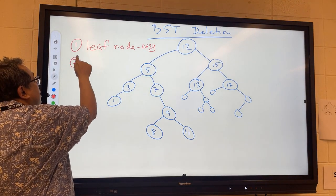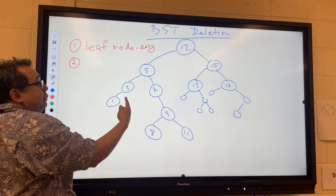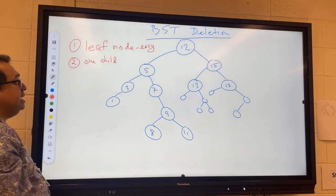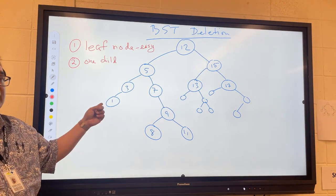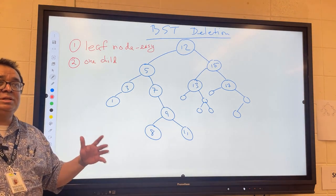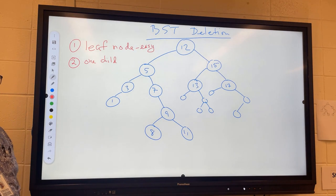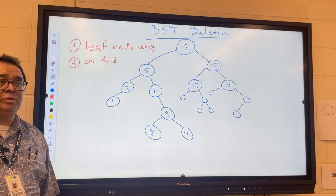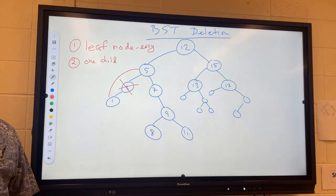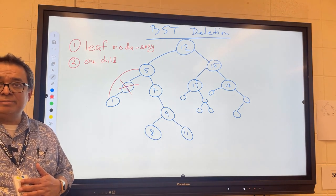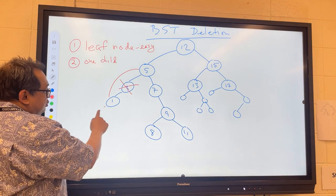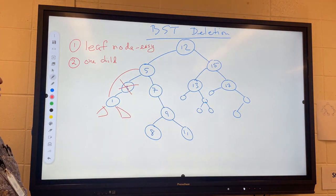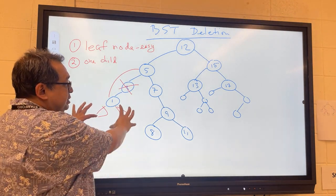The next case we want to talk about is where the node that we want to delete has one child. I'll just take an example here of this node right here. You can see it only has one child, and I want to know if I were to delete that node three, would there be a fairly easy way to fix the tree so that the properties of the binary search tree would be preserved? That's a fairly simple thing. If there was another subtree over here and another subtree over here, that really wouldn't matter because when we connect this over here, everything else would just kind of come along for the ride.